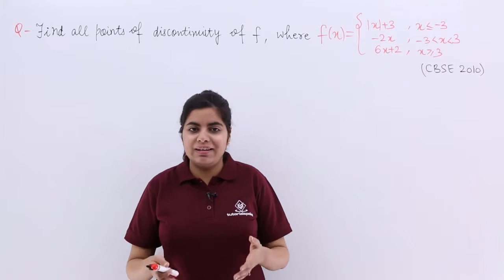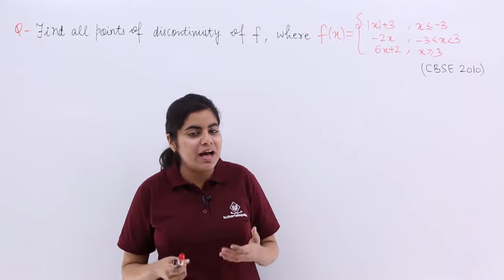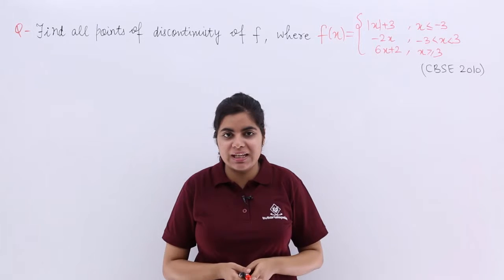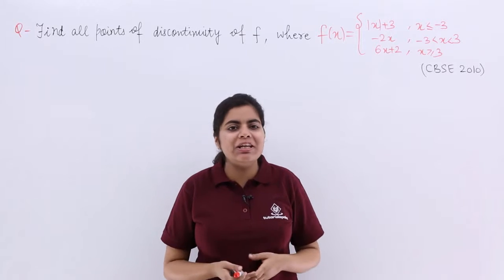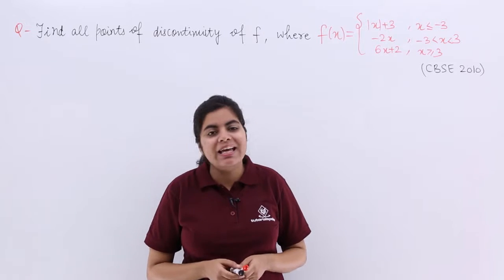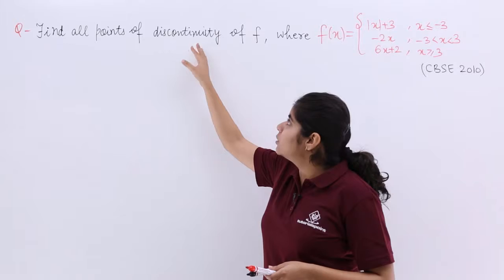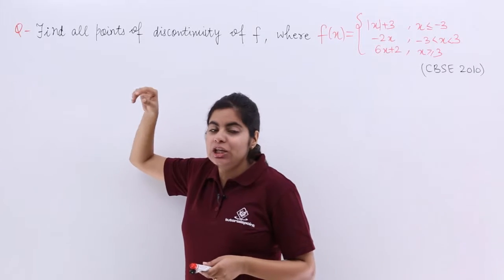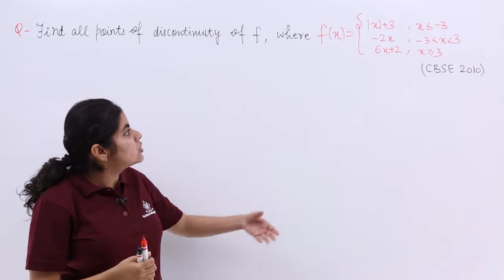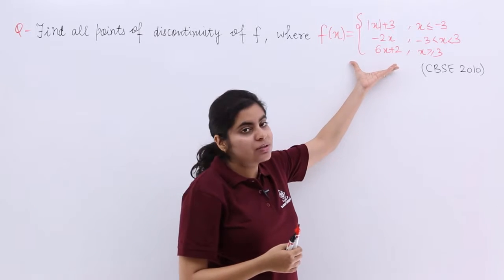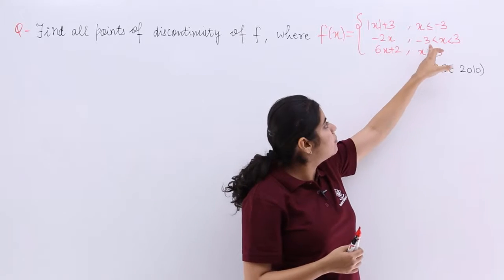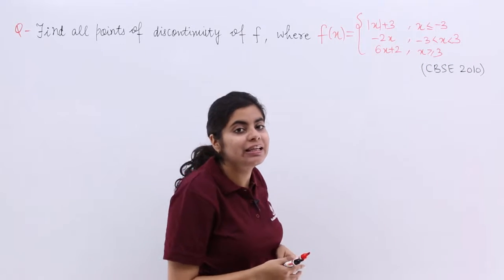In this video, let's see another numerical problem which was asked in the CBSE previous year examination of 2010. It was based on miscellaneous concepts of continuity and discontinuity. It says: find all the points of discontinuity. The function is given by: |x+3| for x ≤ -3, -2x for -3 < x < 3, and 6x+2 for x ≥ 3.